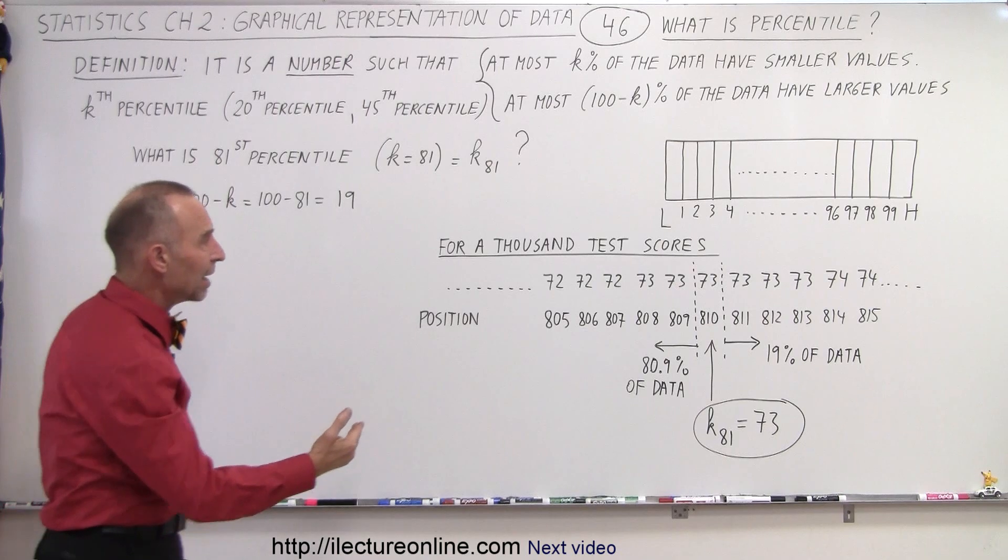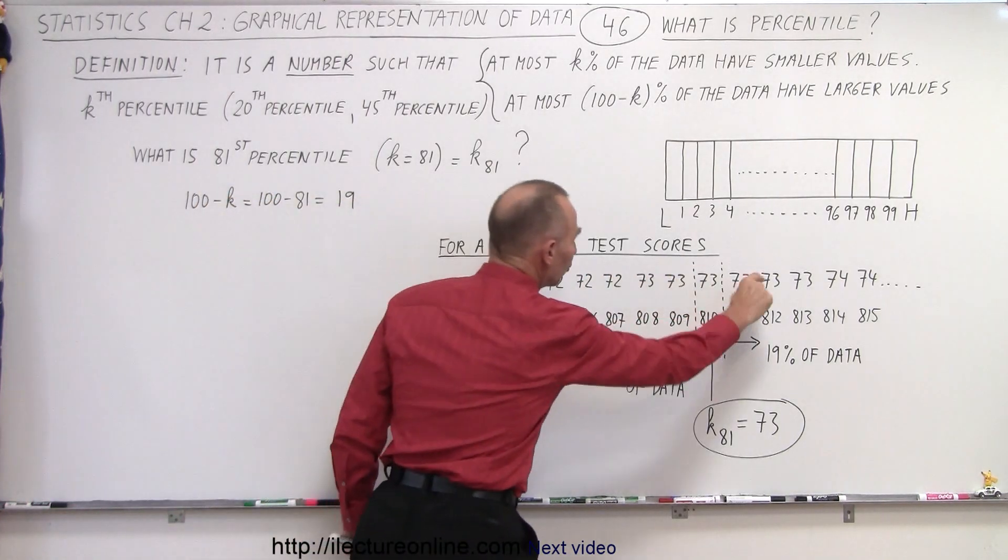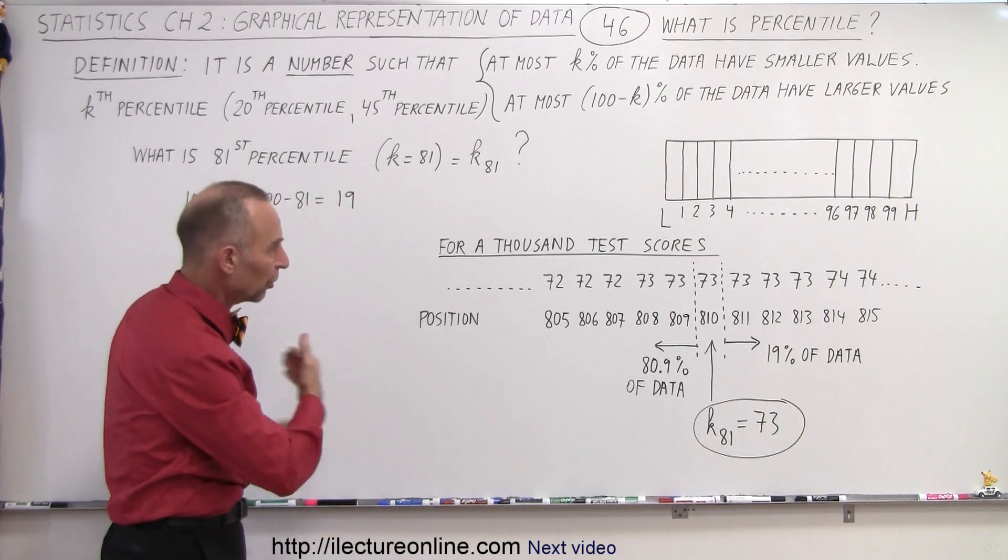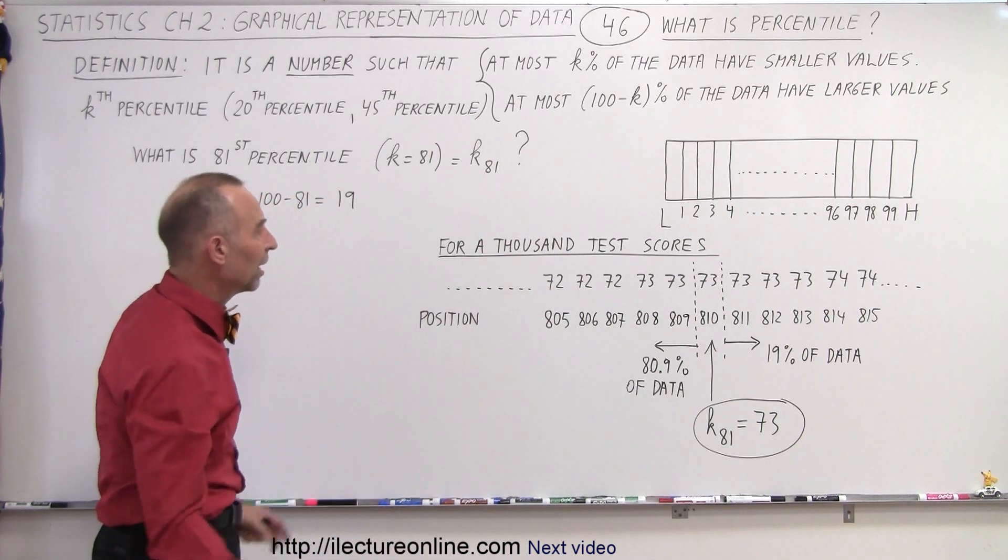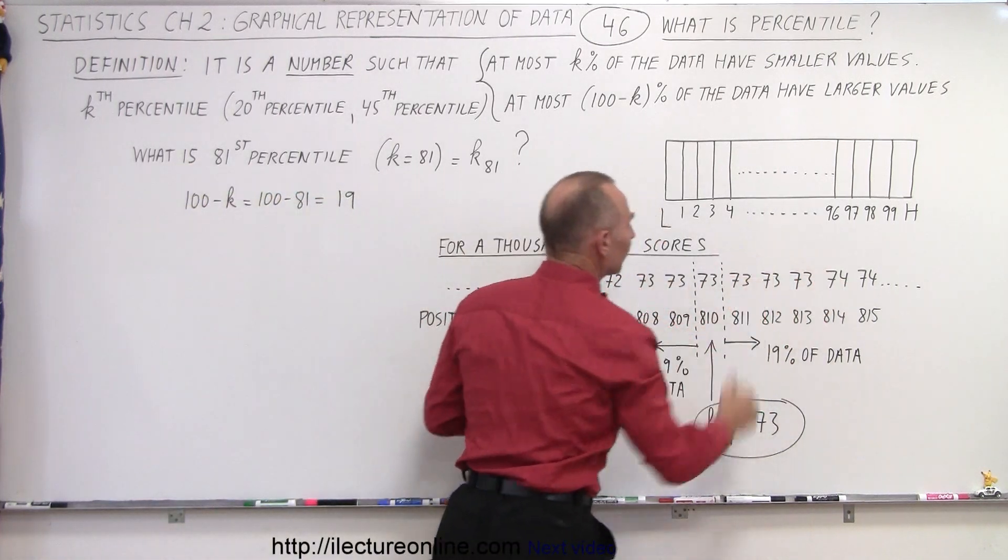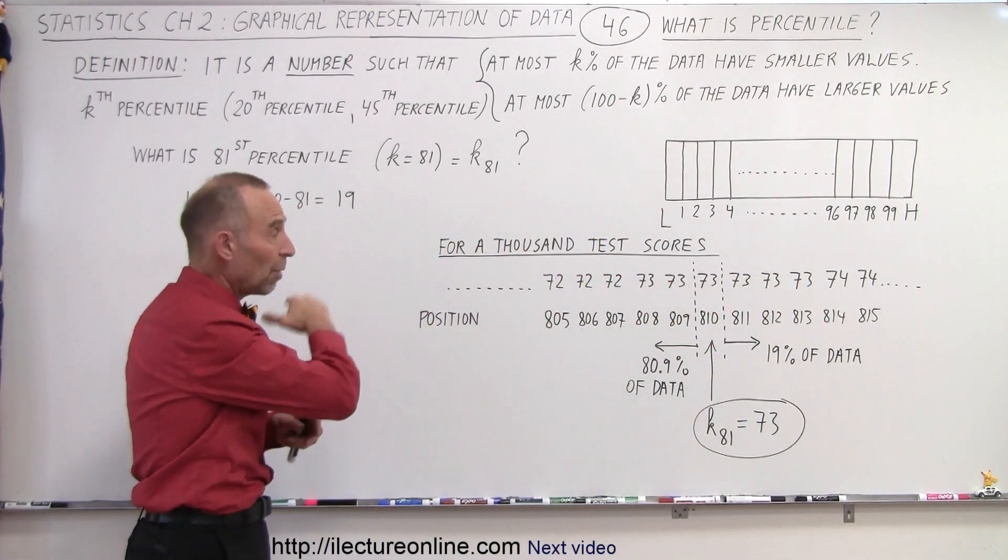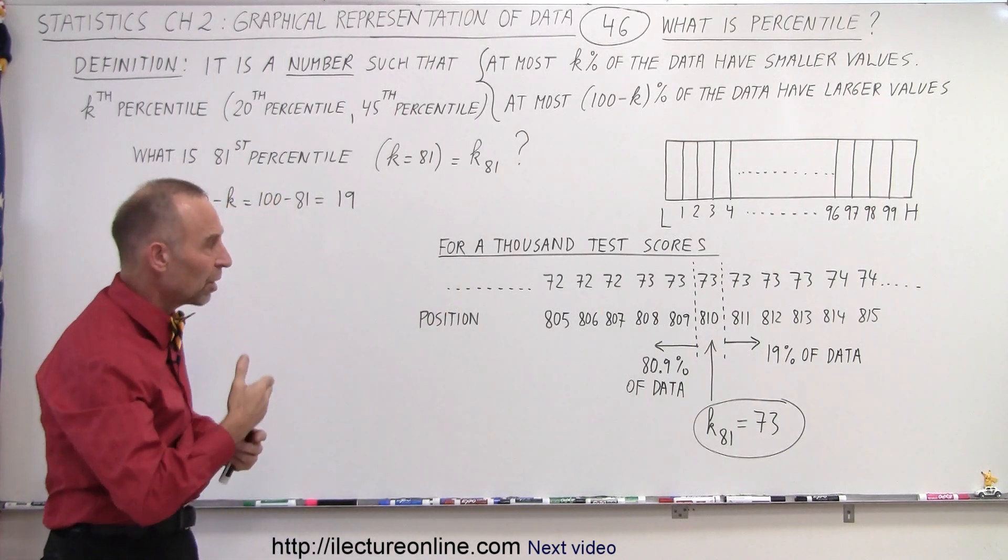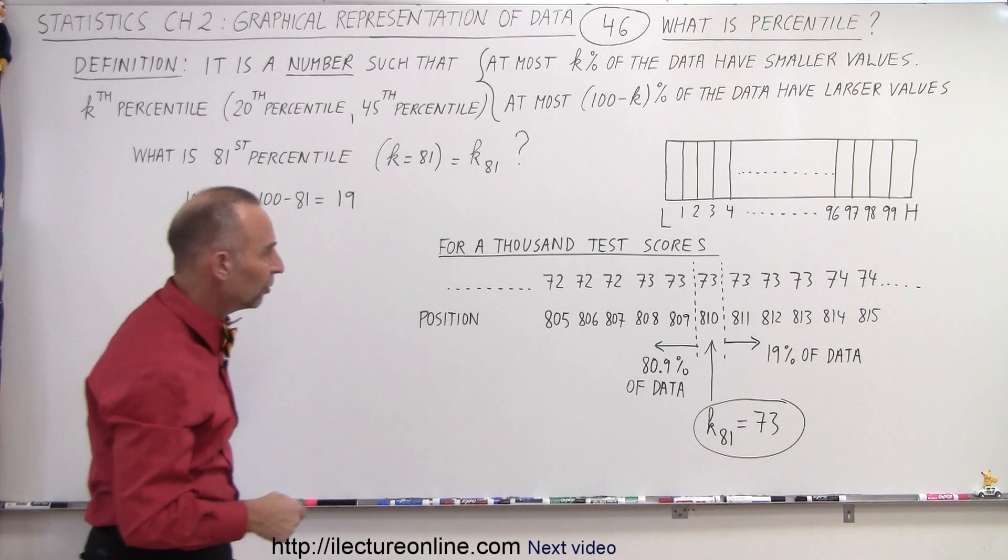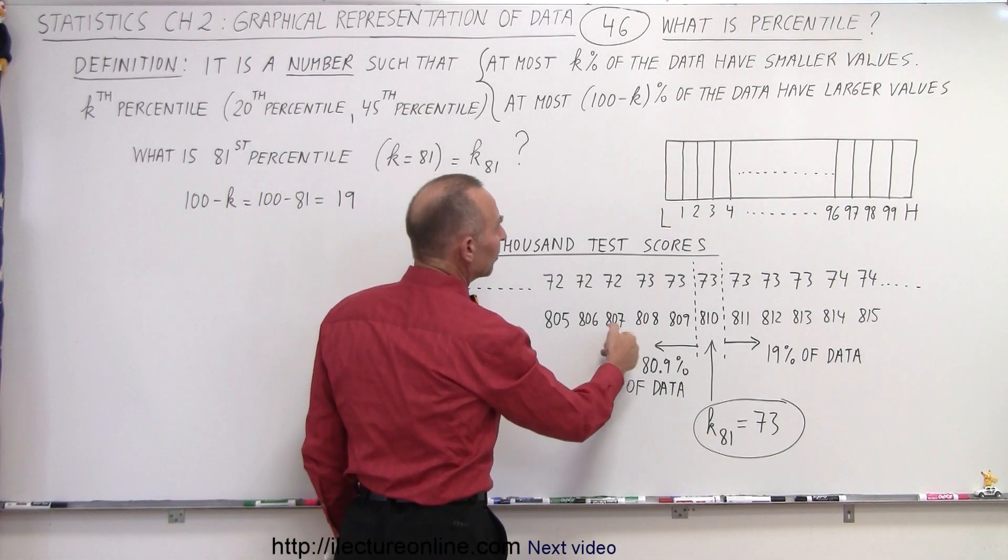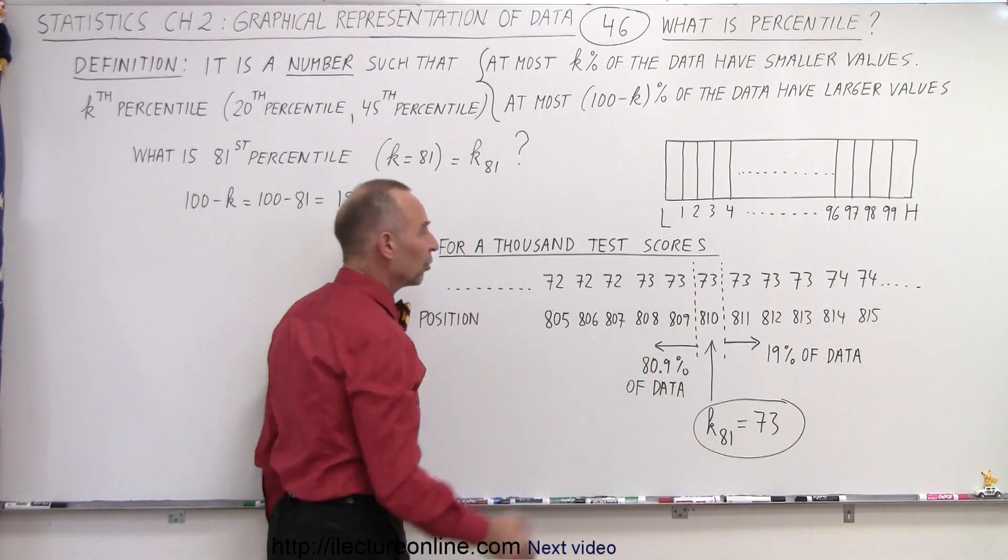So here we have a small portion of a thousand test scores. Let's say this is a standardized test that was taken at a school. There were a thousand students, they all took the test, and these were all the scores. We show you a small sample of those scores, and they are ordered from smallest to largest. That's always the case. Everything always has to be ordered from smallest to largest. And so this is the position, 805, 806, 807, 808 out of a thousand test scores, and these are then the test scores associated with that.